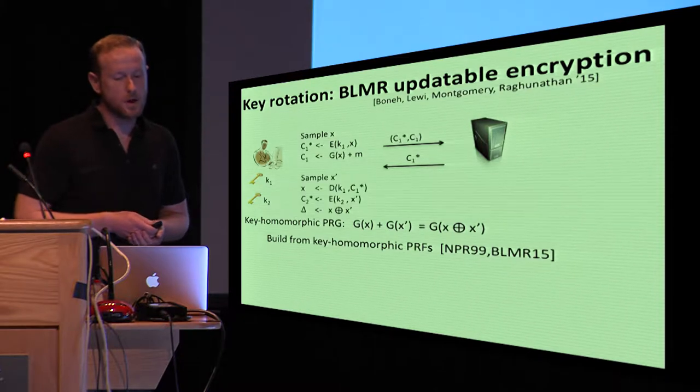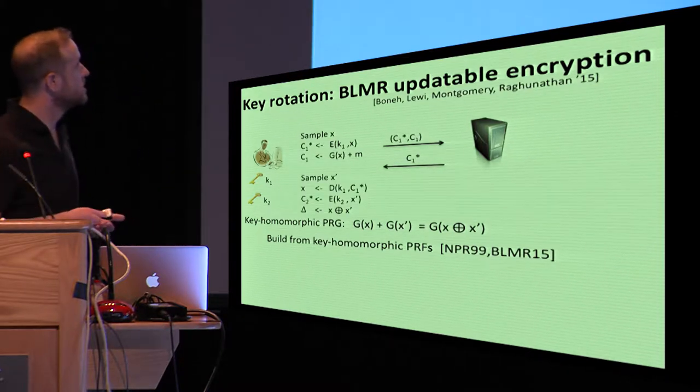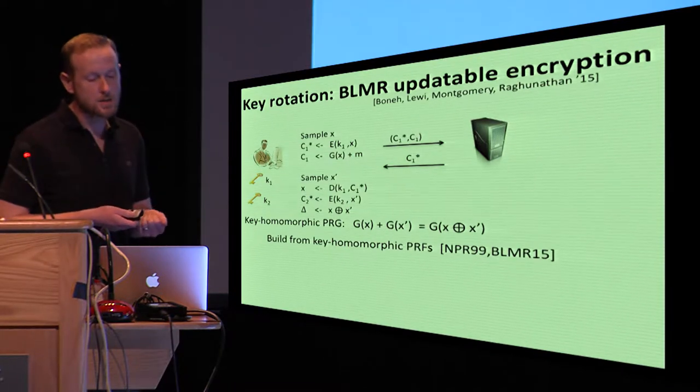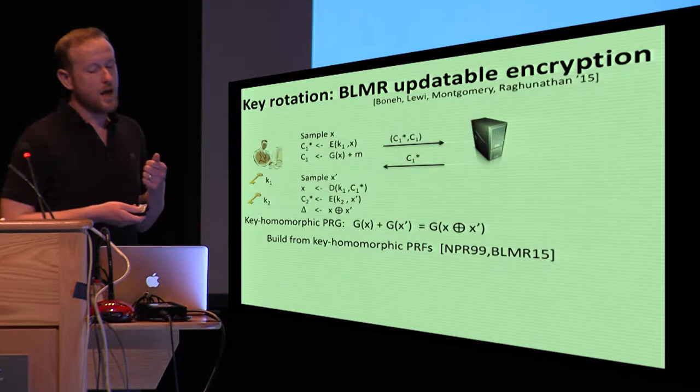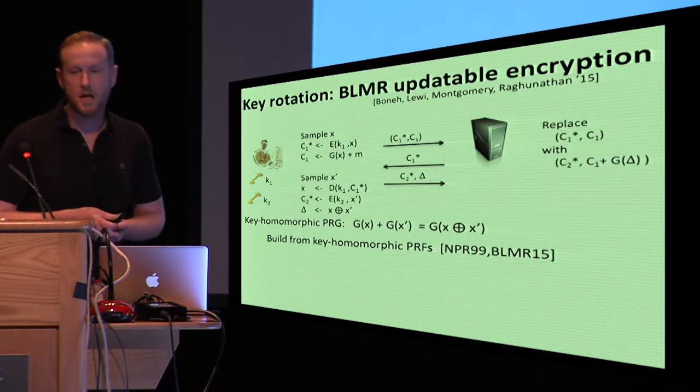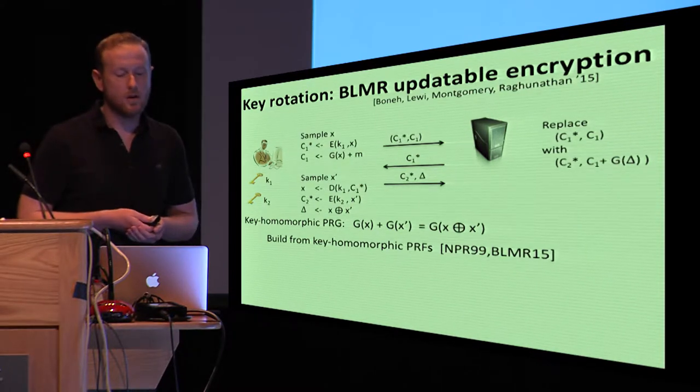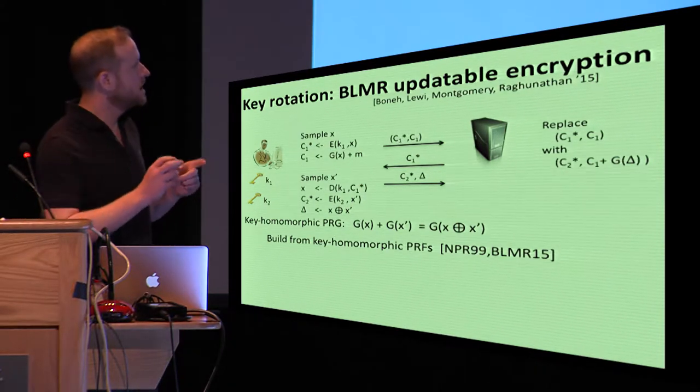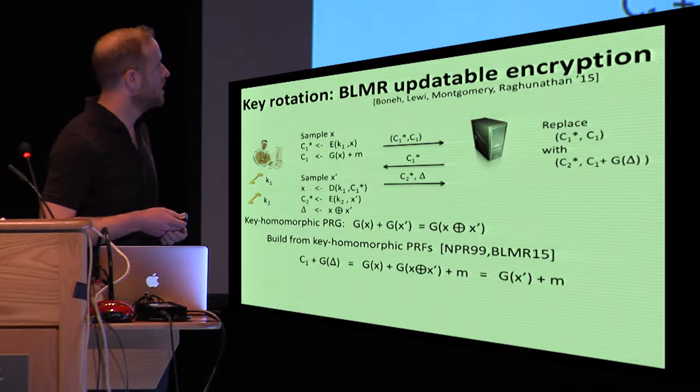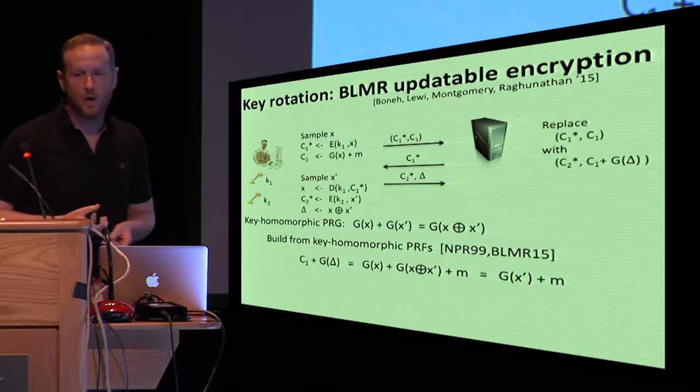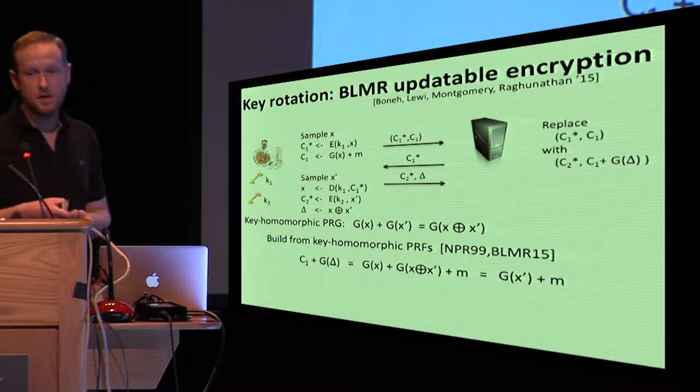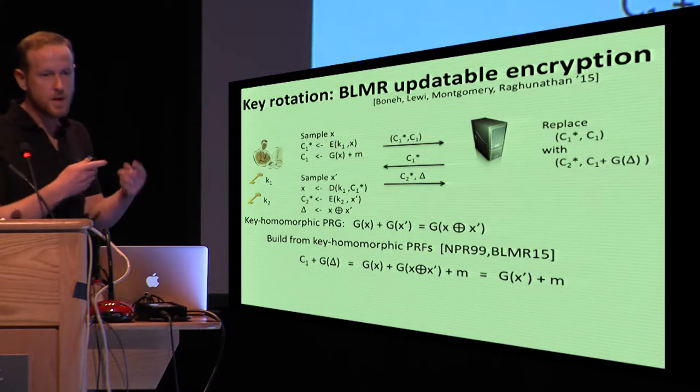And in turn, you can build these from key homomorphic PRFs, and in fact, the BLMR paper was primarily about how to build key homomorphic PRFs in the standard model. The updatable encryption was just like one component to that much broader paper. So to do a rotation now, we can do something interesting, which is that you get back C1-star, you can use that to recover X, you can sample a new data encapsulation key X-prime, and then send back to the server now a new header C2-star, plus this delta token, which is the XOR of X XOR of X-prime. The server can then kind of rotate the data encapsulation key by adding to the portion of the ciphertext C1, this G of delta. By applying the homomorphism property, you see that C1 plus G of delta is indeed equal to G of X-prime plus M. So we've effectively rotated all the secrets.